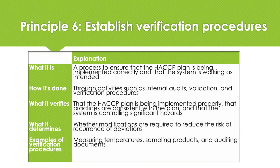In order to verify that the HACCP system is functioning as intended, principle six establishes procedures for verification. Once a plan has been established, it is necessary to ensure that it is effective in preventing the hazards that have been identified. An effective HACCP system necessitates minimal end-product testing, and it is also necessary to periodically verify that the controls are functioning as intended. You will decide what records are required to demonstrate that the critical limits have been met and the HACCP system is in control, address regulatory requirements, and include records from the system's development and operation.